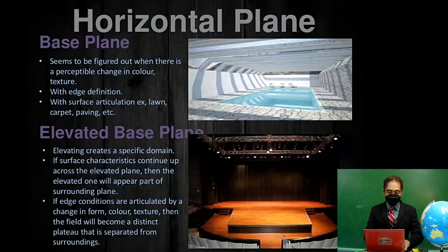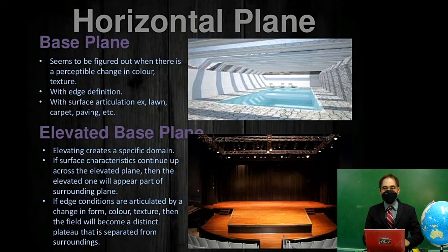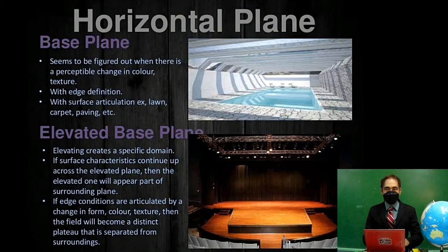The horizontal base plane appears as a figure when there is a perceptible change in color or texture, with edge definition and surface articulation — for example, a lawn, carpet, or pavement. Elevating the base plane creates a specific domain. If surface characteristics continue up across the elevated plane, the elevated one will appear as part of the surrounding plane. If edge conditions are articulated by a change in form, color, or texture, the field will become distinct.